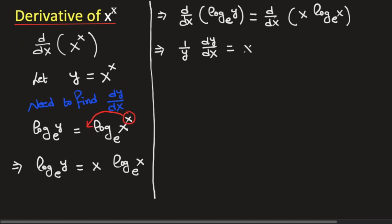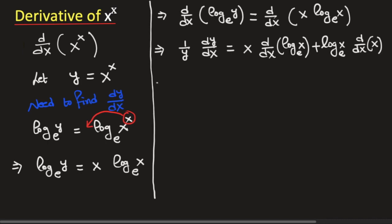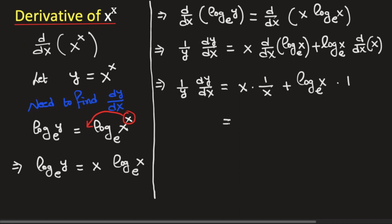First, we write the first function which is x, then take the derivative of the second function which is ln(x), and then write the second function and take the derivative of the first function which is x. This implies that 1 over y times dy/dx is equal to x times 1 over x, plus ln(x) times 1. Simplifying this, we get 1 plus ln(x).